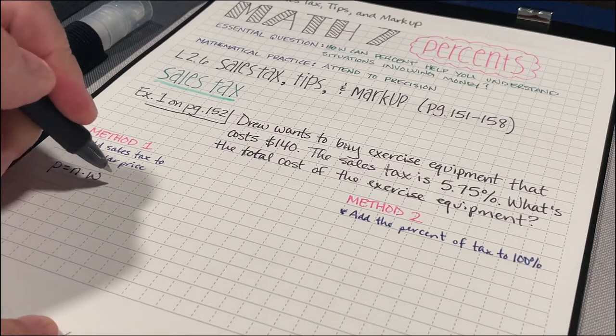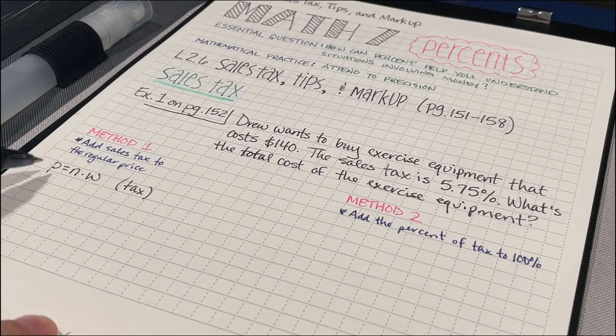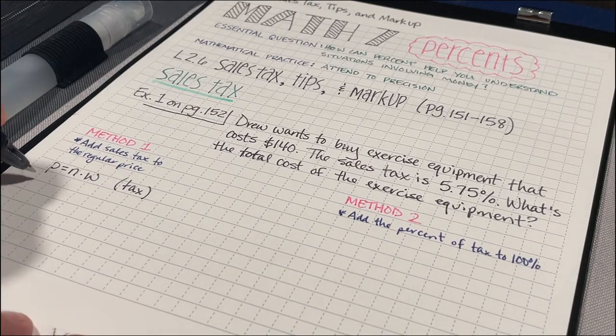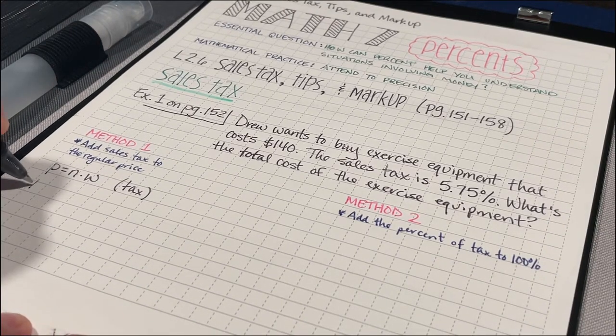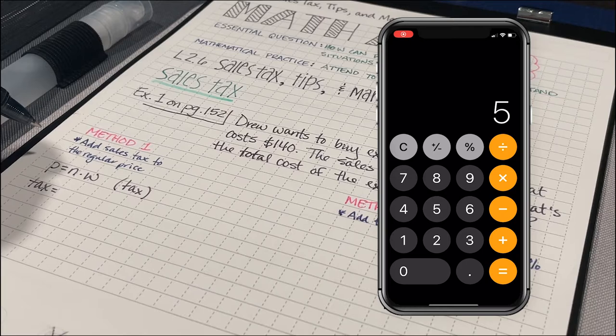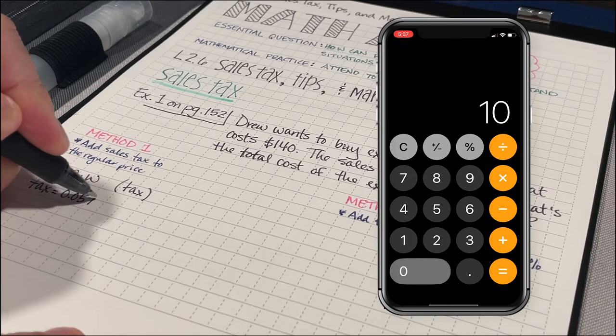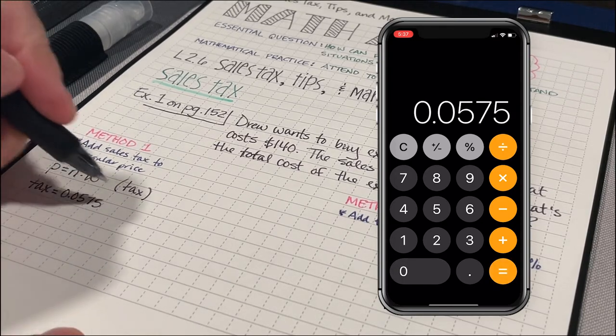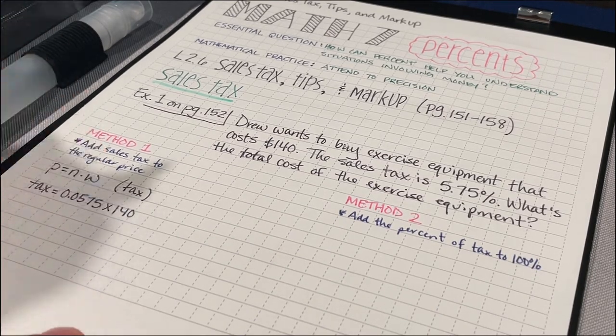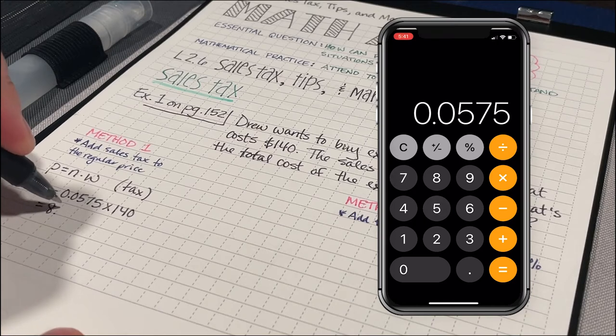So this part is how I'm going to find out my tax. The part is going to be the tax that we're going to add on to the regular price of the exercise equipment. I can say that my tax equals the percent. So 5.75% as a decimal is 0.0575. And then I'm going to multiply that by the whole, which was the cost of the exercise equipment, which was $140. What I'm going to get out of that is $8.05.